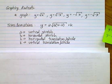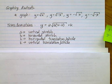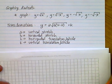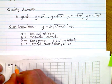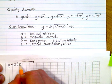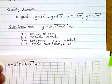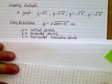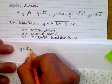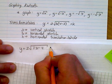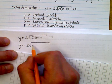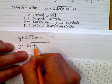Let's look at a couple of graphs. Consider the function y = 2√(2x - 4) - 1. We have to rearrange this: factor out the 2 inside to get y = 2√(2(x - 2)) - 1.